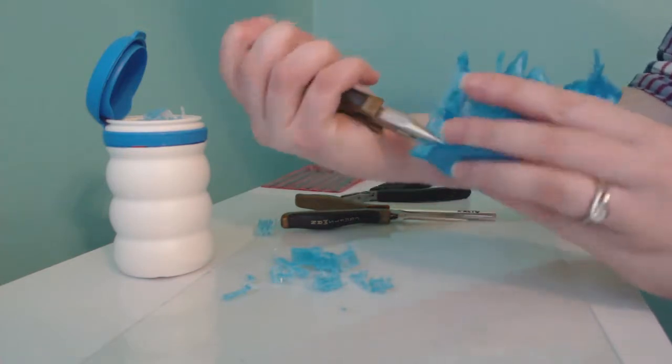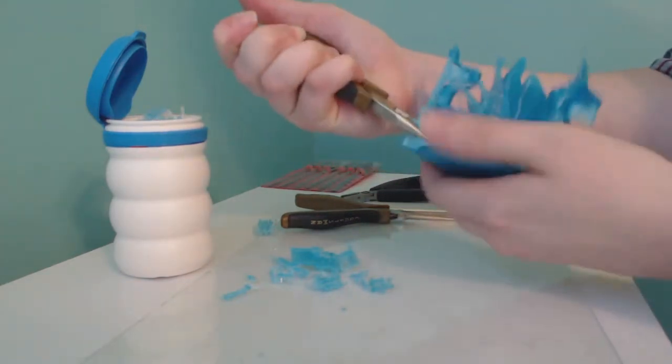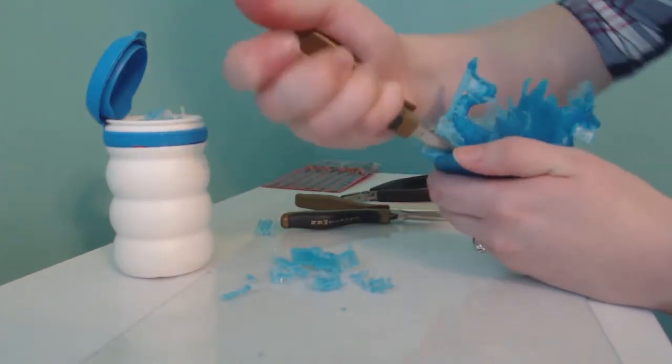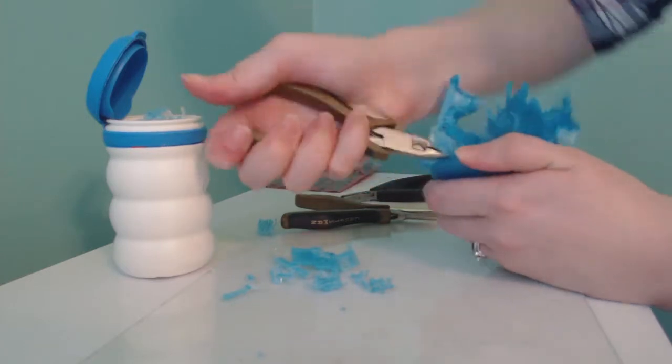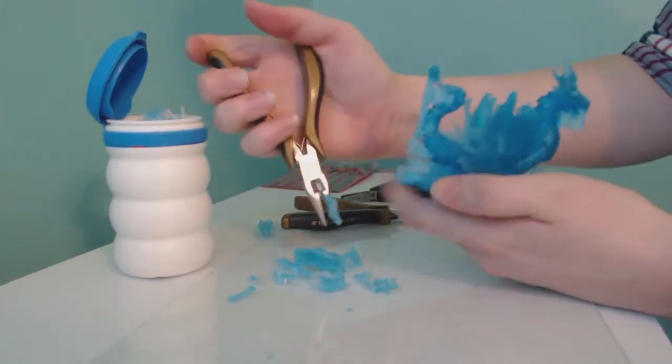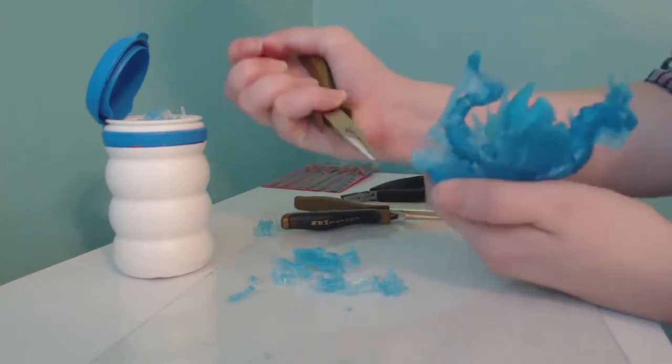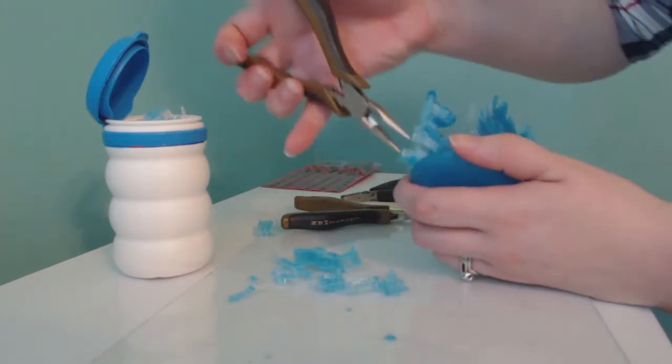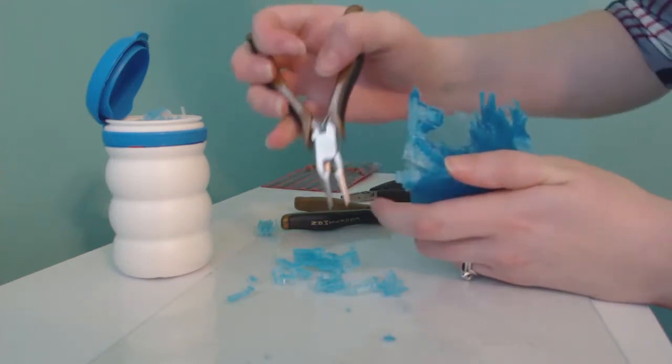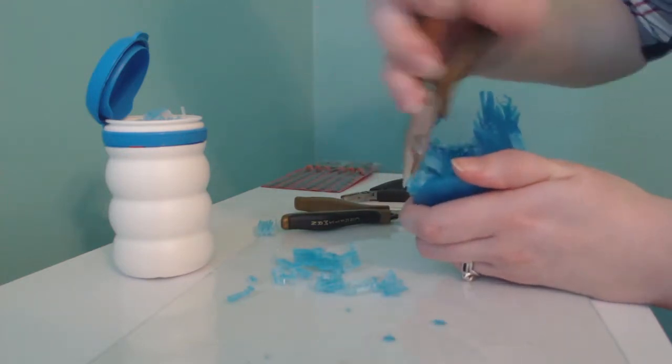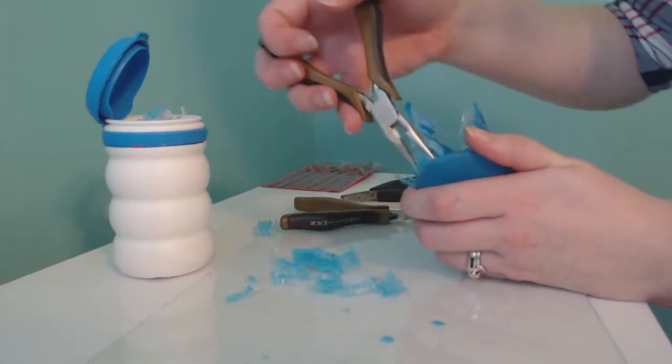When I use the pliers, I like to go ahead and twist it and then go back and forth as well. It's a nice, easy way to start getting the scaffolding removed from your model. I'm sure there's other people that have different techniques as well. So find what's most comfortable for you and also what types of prints that you print out.